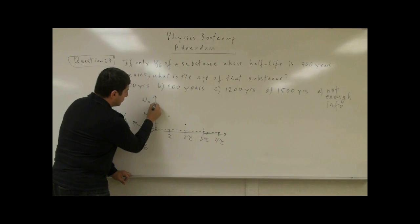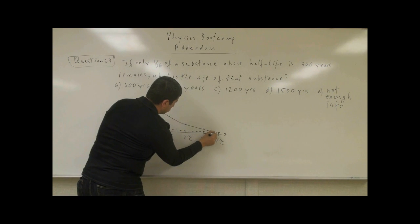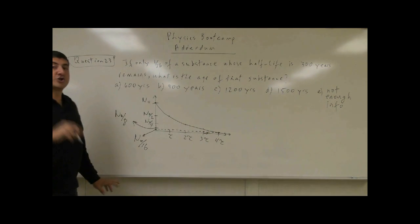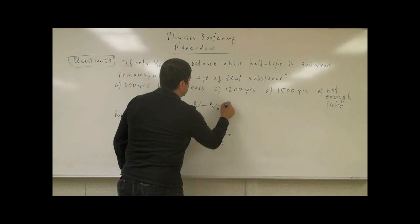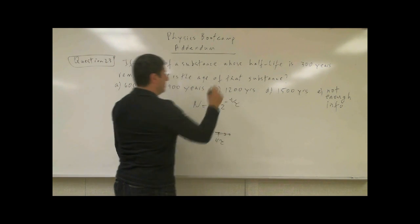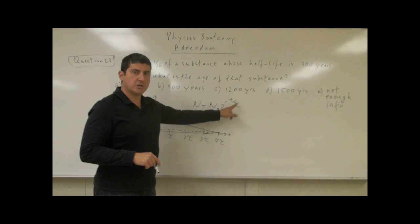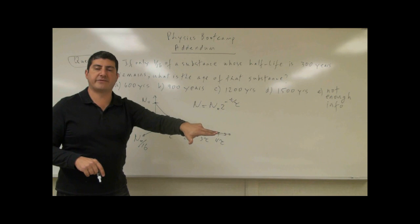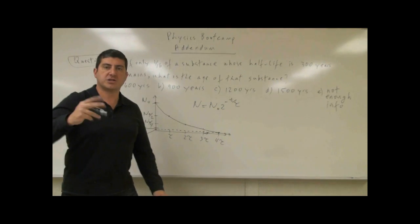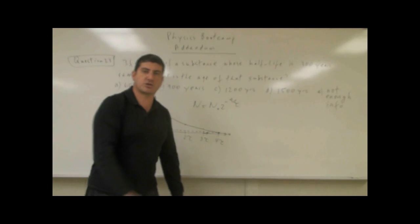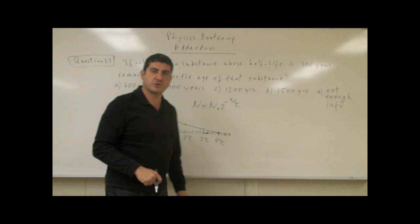So the graph looks exponential-looking. The official equation for this is N equals N0, two to the minus T over tau. Every time T is equal to one tau, you have one-half of what's remaining. T equals two tau, you have two to the minus two. T equals three tau, two to the minus three. T equals four tau, two to the minus four.